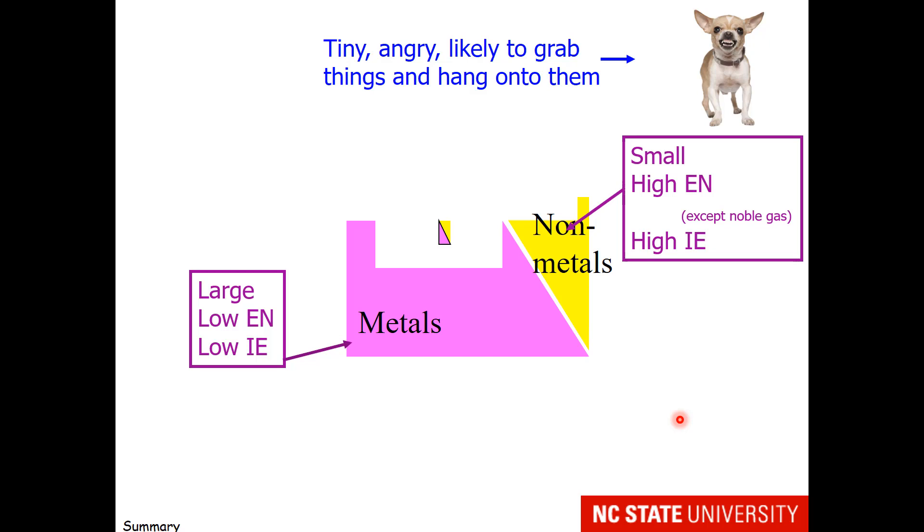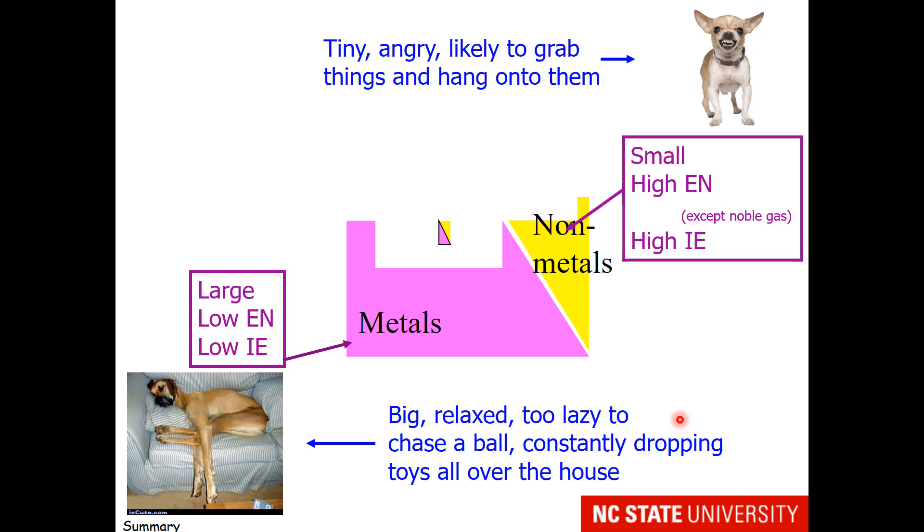So what is the opposite of a tiny dog? A very large dog. Very large dogs, in my experience, are relaxed. They're too lazy to chase a ball, so they don't really grab onto things. In fact, they like to drop their toys and their fur all over the house.